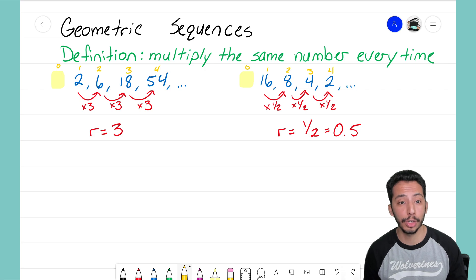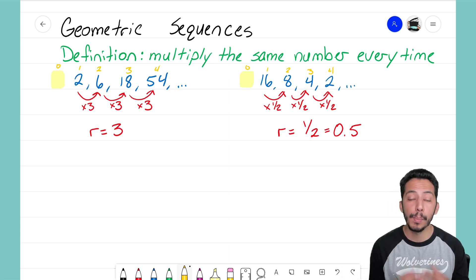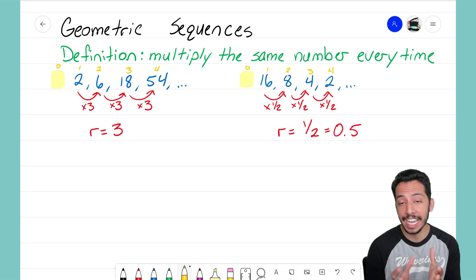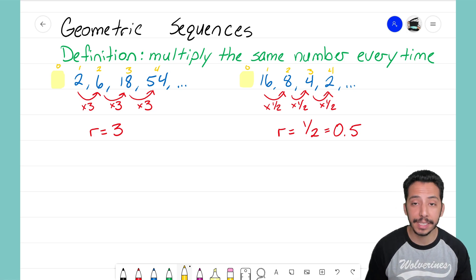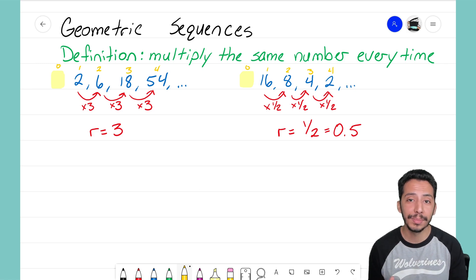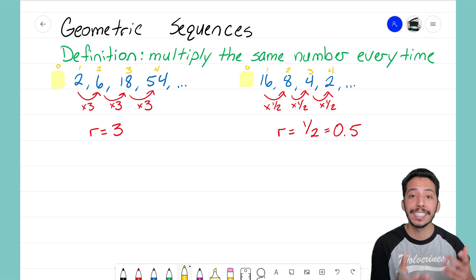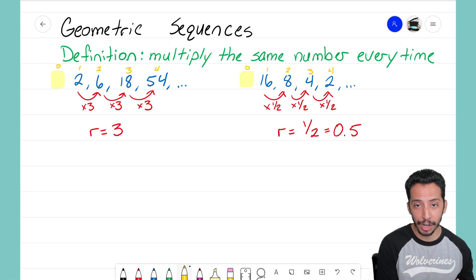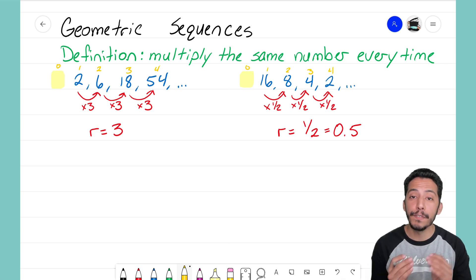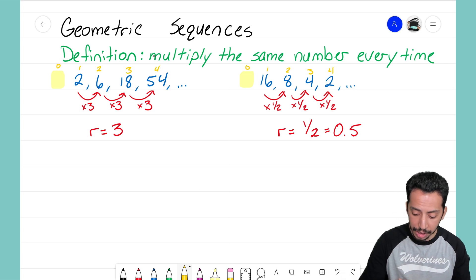When you see a sequence being written out, you're always starting with the first term, the second, the third, and the fourth. We now want to figure out what is that zero term before our first term. Very similar to how we did it with arithmetic sequences - if you forgot, to find the zero term for an arithmetic sequence we would take the first term and subtract the common difference.